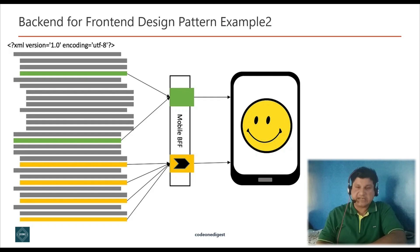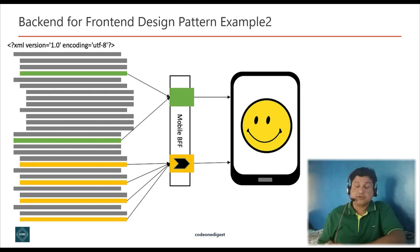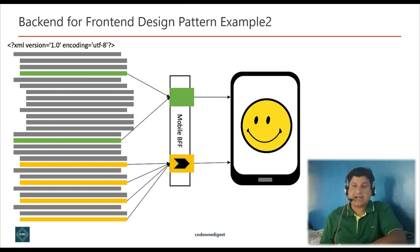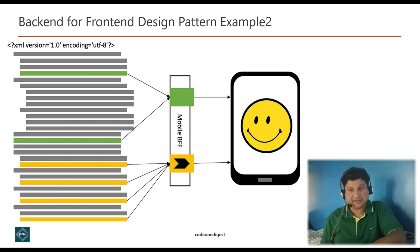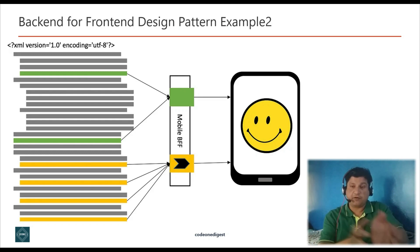Now let's understand this pattern with another example. We are showing that a BFF layer between a legacy API and different clients allows separate data to be extracted from the legacy API for different mobile app screens. We can have a BFF layer for different screen types within a mobile channel itself. In mobile, we have tablets and different screen types where we can optimize our output per screen type. We can go as modular as we want, with separate BFF layers for different screen types and devices.